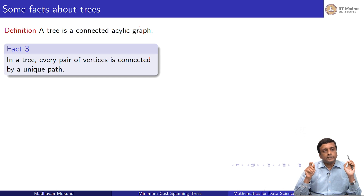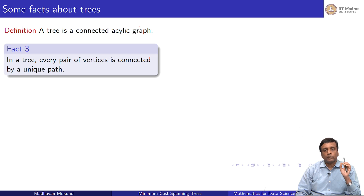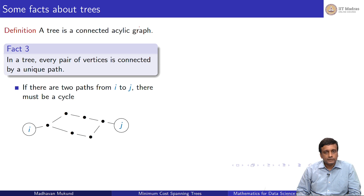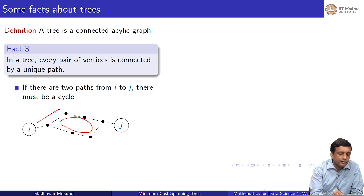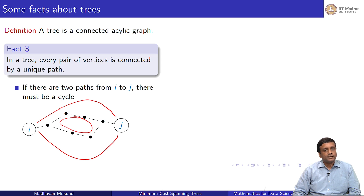The third fact is that between any two vertices in a tree there is exactly one path. If there were two different paths from i to j, then somewhere the paths diverge and rejoin, creating a cycle. Since a tree is acyclic, no such cycle can exist, so the path between any two vertices must be unique. In a tree, connectivity is guaranteed, but only via one route.